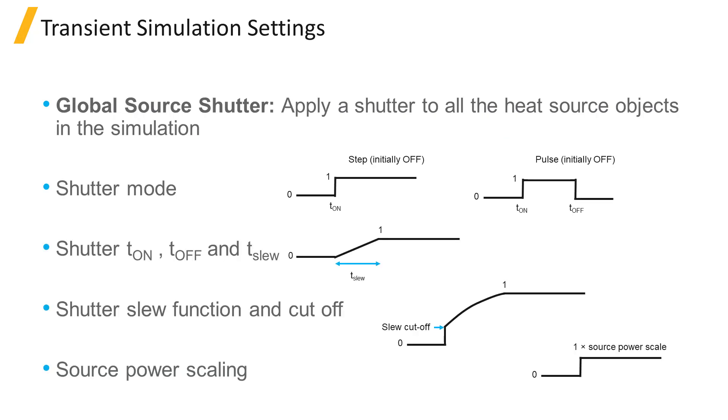The global source shutter settings will apply a time-dependent shutter to all the source objects in the simulation. If enabled, there are two shutter modes available, step and pulse. Each one can be set in an initially on or initially off mode. The on and off times for the shutter can then be specified.